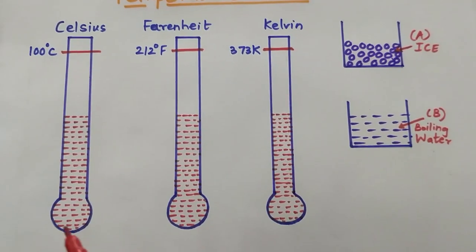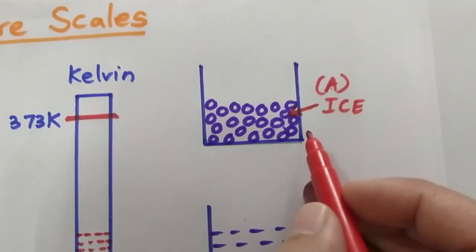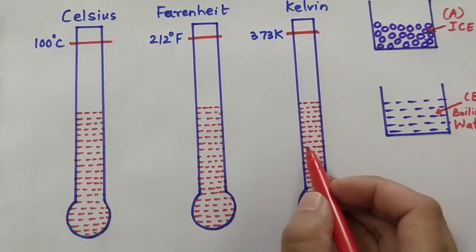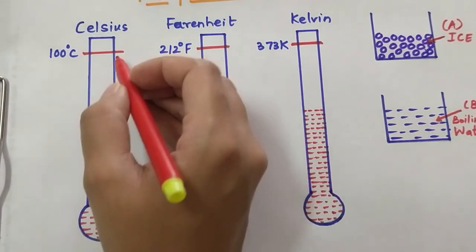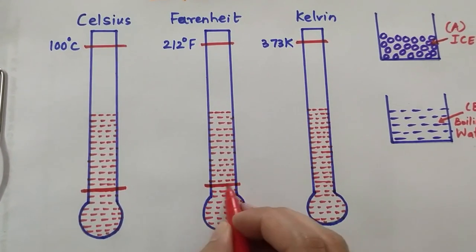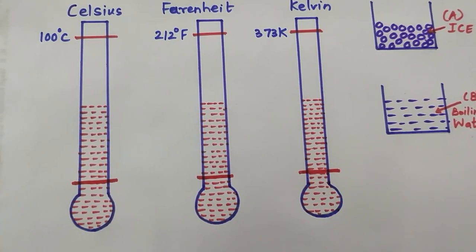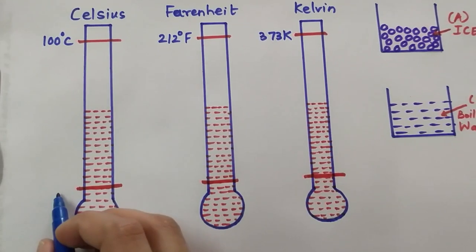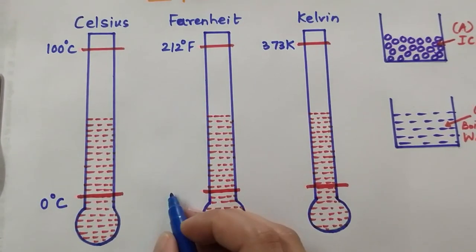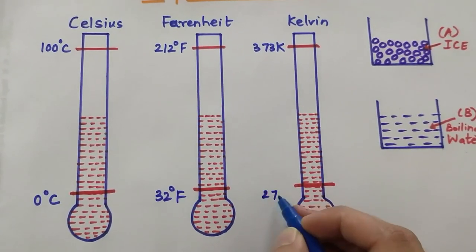Now in the second case, we immerse these three glass tubes in beaker A which contains ice. Due to the cold temperature of the ice, the mercury in these glass tubes contracts. The mercury level drops down to a particular point in all three glass tubes. Since they are identical, these three points will be at the same level. The degree Celsius scale assumes this point to be 0 degree Celsius, the Fahrenheit scale assumes it to be 32 degree Fahrenheit, and the Kelvin scale assumes this point to be 273 Kelvin.